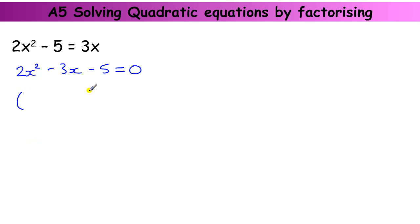So we're looking to factorise this into a double bracket. 2x squared, the only way we can make 2x squared by times in 2x by x. We want to make minus 5. The only way we can do that is to do 1 times 5.